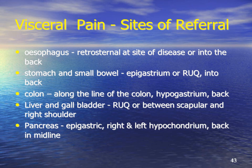The liver and gallbladder pain is usually in the right upper quadrant and may radiate around to the back between the scapula and the right shoulder. Pancreatic pain may be predominantly epigastric. For example, ascending colon pain would be felt on the right side and can radiate into the back.